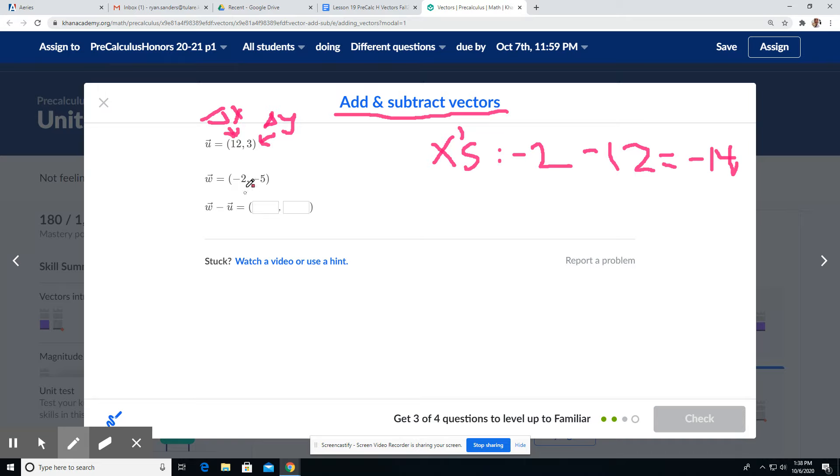Okay? And then we do the same thing for the Y's. The Y value comes first, is W comes first. So this is vector W minus vector U. So the W component for Y is negative 5, minus, that's that minus sign right there, whatever the U component for Y is, 3.